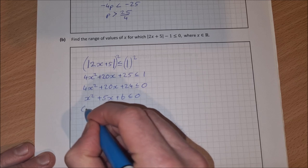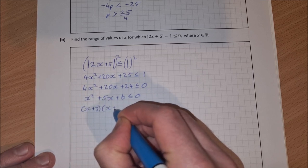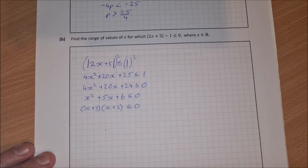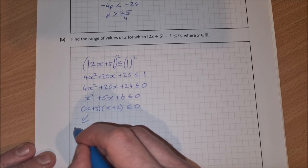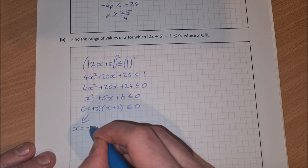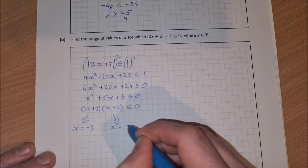So factors of this would be x plus 3 by x plus 2 less than or equal to 0. And then I can take each factor out individually and say x is equal to minus 3 and x is equal to minus 2.